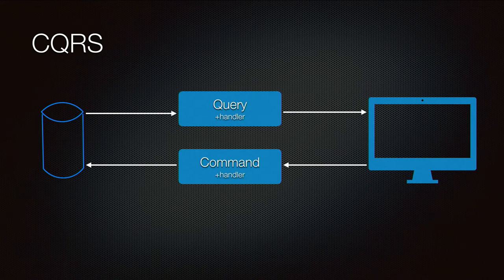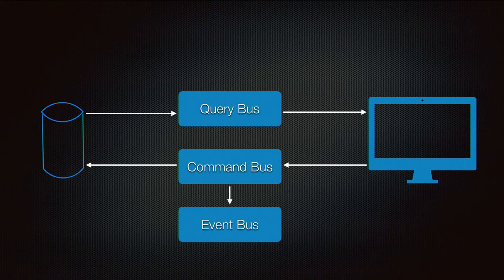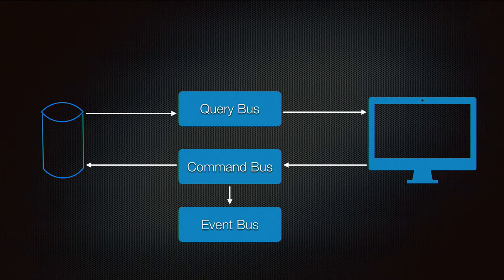Generalnie działa tak, że stan systemu modyfikują komendy. To są takie klasy, które mają swój handler. A odczyt stanu systemu robimy przez query. Czyli nie na poziomie obiektu, tylko w ogóle na poziomie całego systemu — ten sam koncept wdrożony. Możemy mieć dodatkowo eventy, które informują, że jakaś zmiana zaszła w systemie. Mamy trzy kanały propagowania informacji: Query Bus, Command Bus i Event Bus.